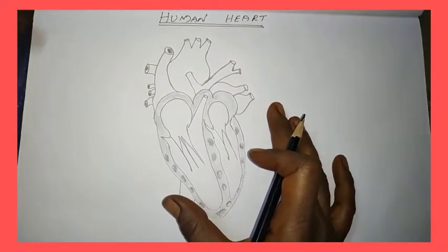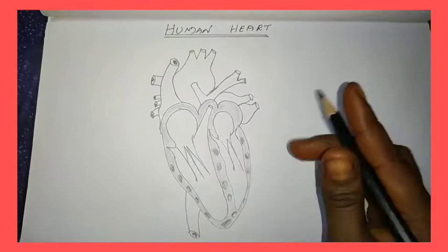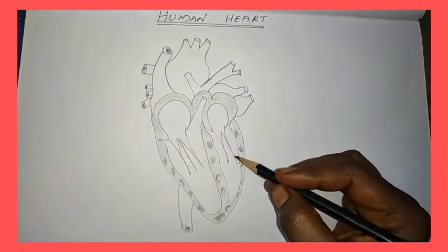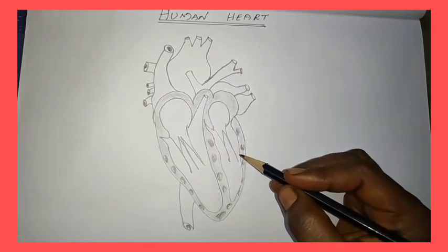Now the diagram is ready. I make arrows. These arrows mean how blood should push out and which entry goes inside.